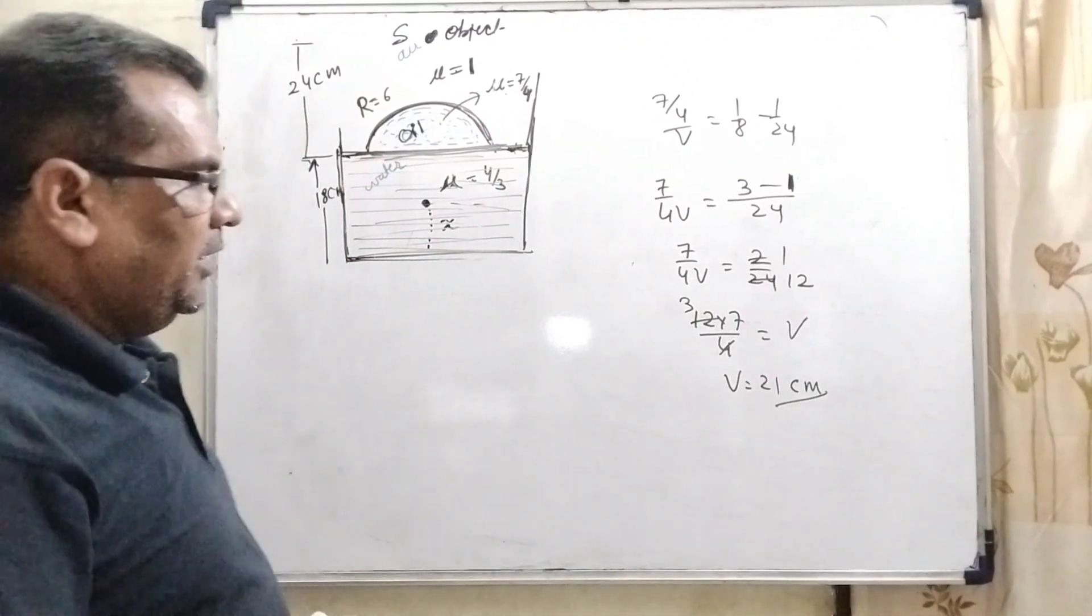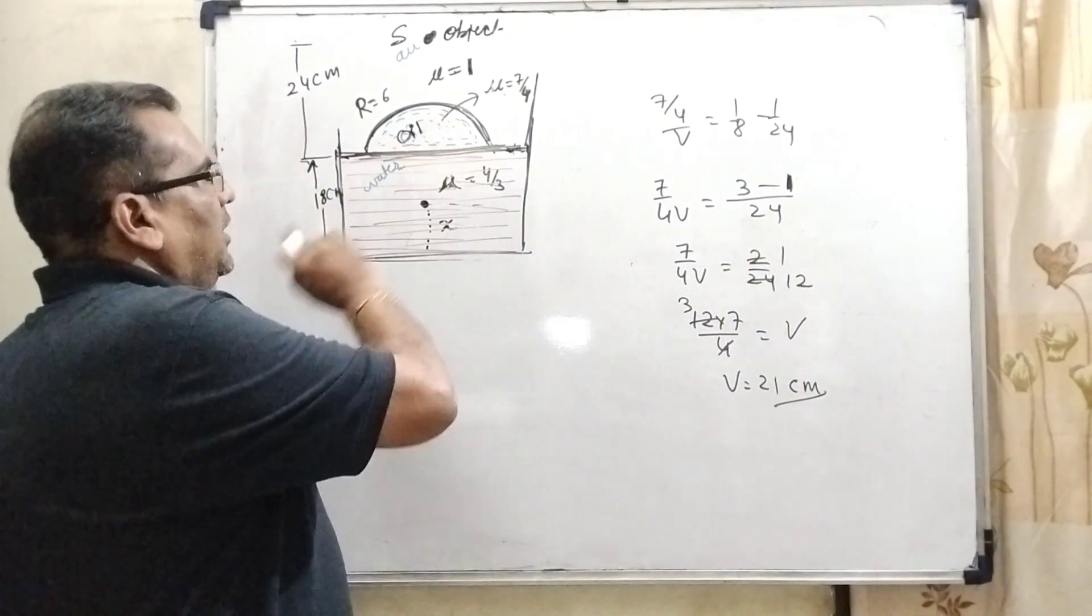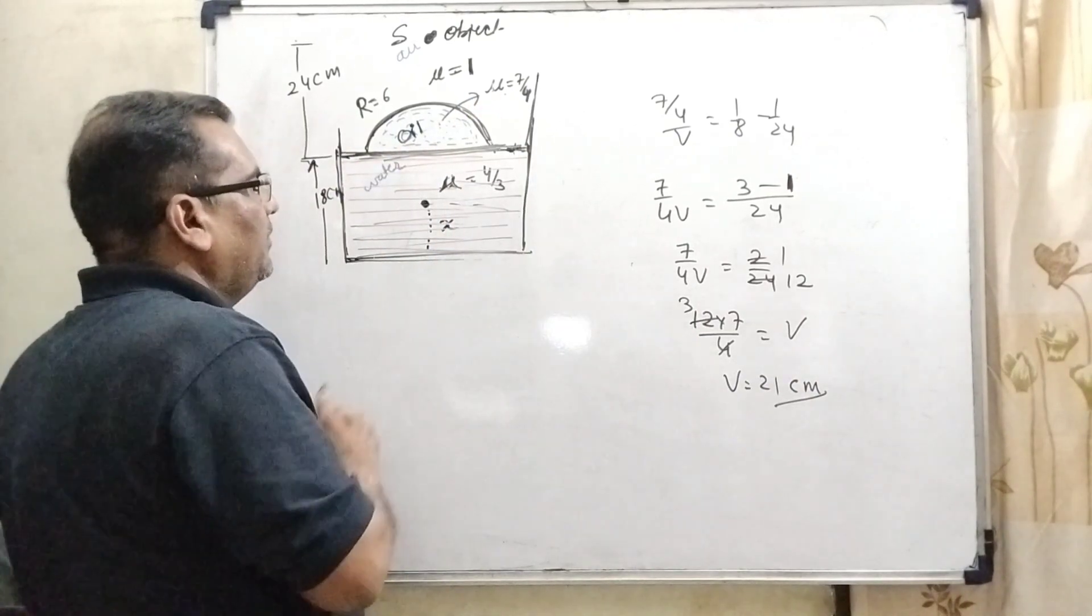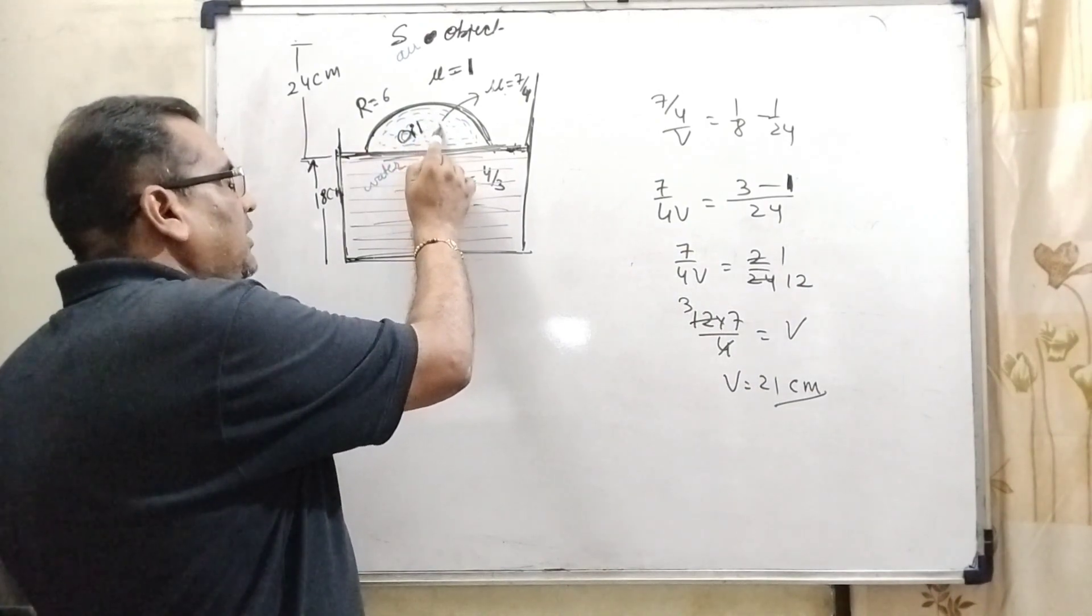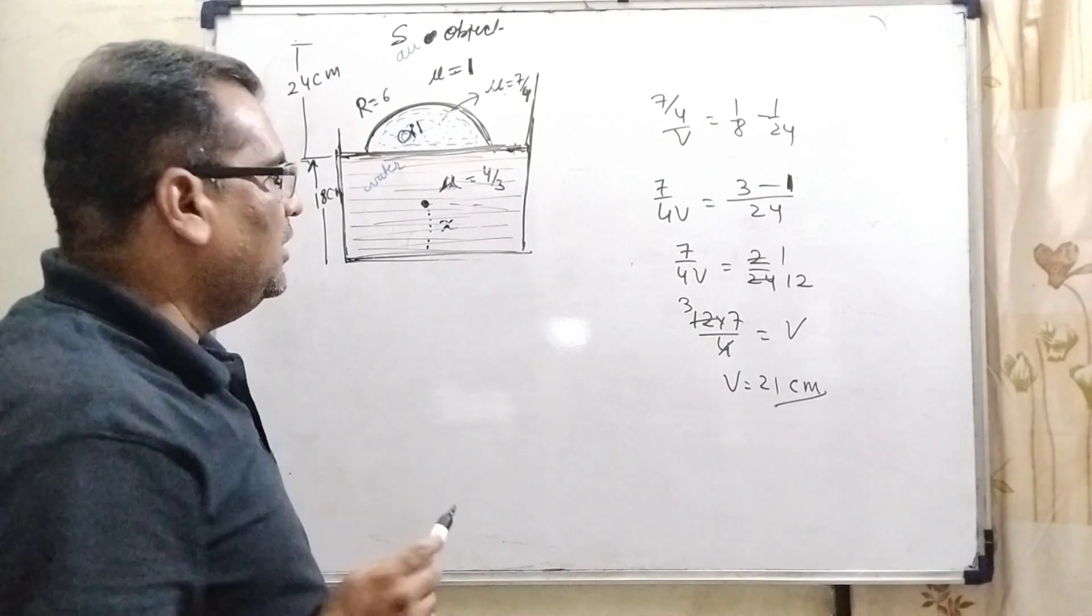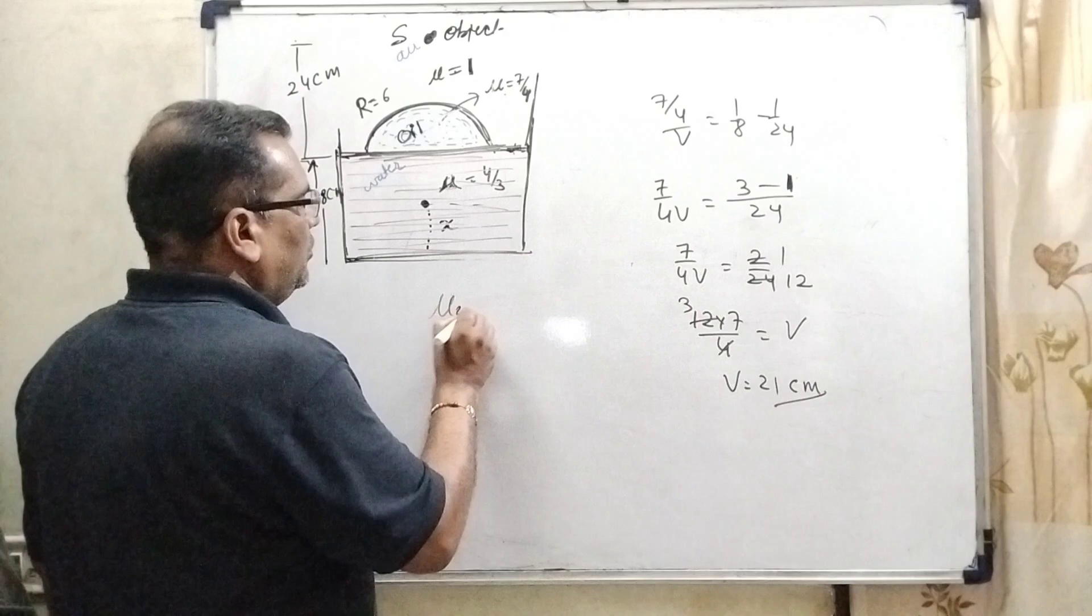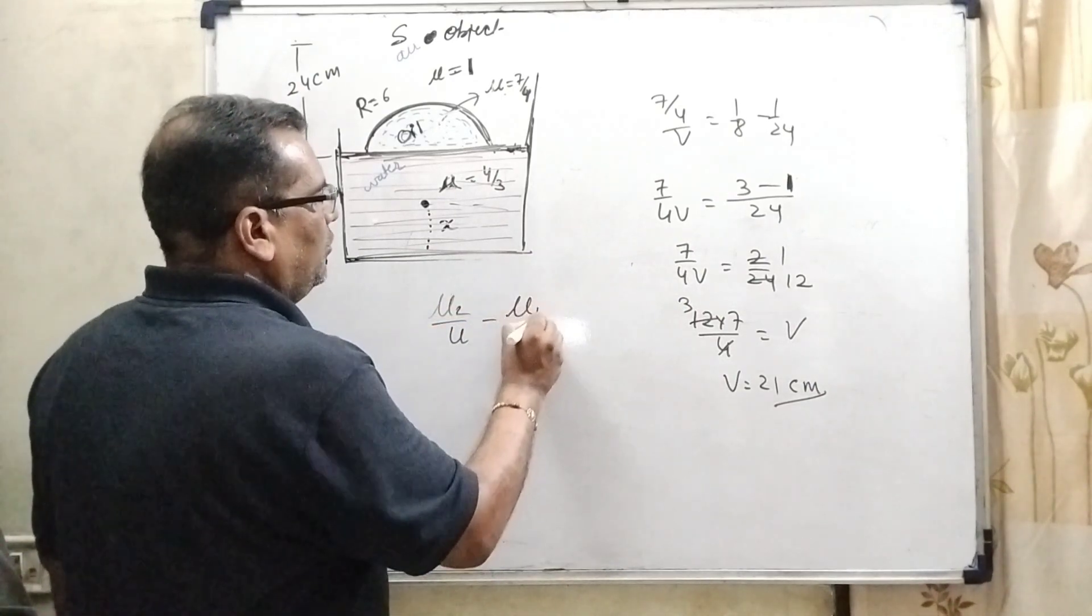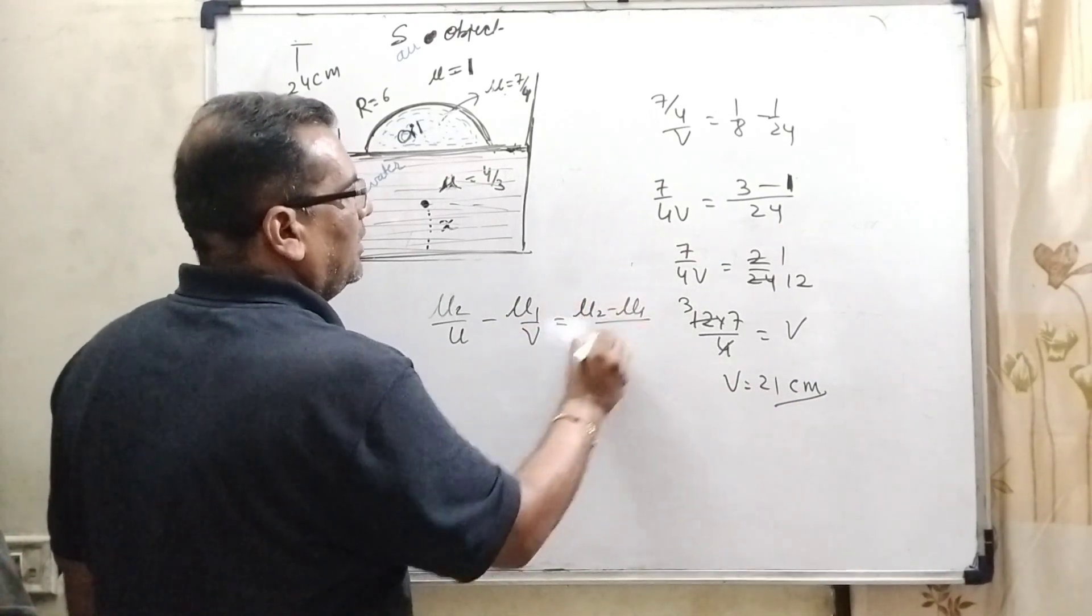Now again, we have to find out refraction through this oil to water. Here, what is the refractive index of oil? That is 7 by 4 and refractive index of water that is 4 by 3. So it is oil, the medium that is denser with respect of the water. So we are using refraction through denser medium to rarer medium. Which formula we are using? Here, mu 2 by U minus mu 1 by V equal to mu 2 minus mu 1 upon R.